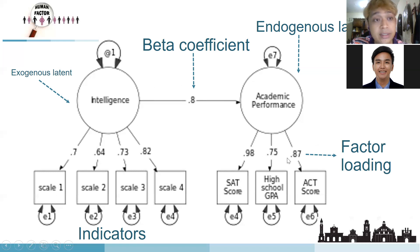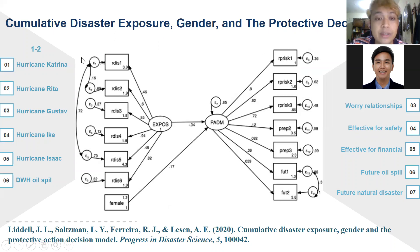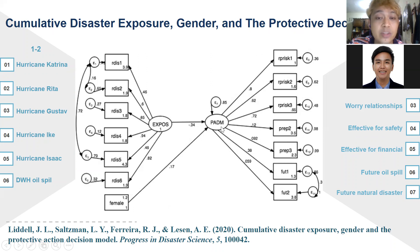Usually higher than 0.20 is already significant, sometimes 0.15 or even 0.12 is significant. The beta coefficient shows the causal relationship among latent variables, while the factor loading shows how well indicators represent the latent. For instance, a study examines the cumulative disaster exposure, gender, and protective decision model (PDM) to see the story between these three constructs.